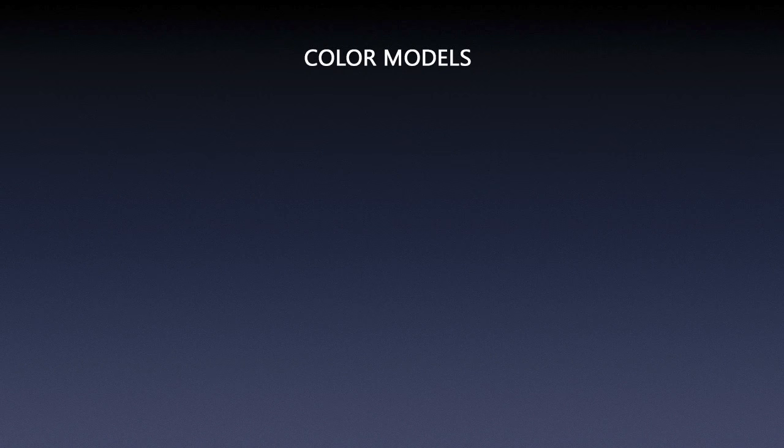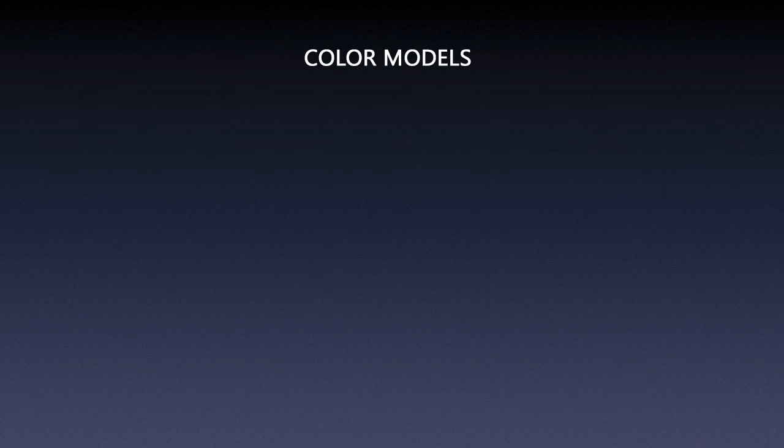So let's talk about color models first. Color models basically describe color theory in a mathematical, abstract way. Here we have the RGB color model — the additive color model — because it uses the three primary colors red, green, and blue to describe and create pretty much all other colors.